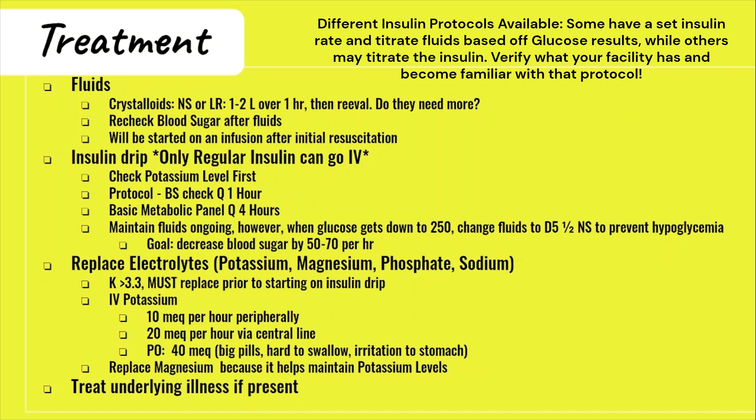After the initial boluses, the patient will be starting on some type of fluid infusion. With insulin, the most important thing to know is that the only insulin that can go IV is regular insulin. Before starting the insulin drip, you must have a potassium level because insulin drives potassium into the cell. So if your patient's potassium is already low and you give insulin, you can make it even lower — and a low potassium predisposes patients to deadly cardiac arrhythmias. Each facility will have a protocol for adjusting the rate of the insulin drip, so please follow your hospital's policies to the dot.